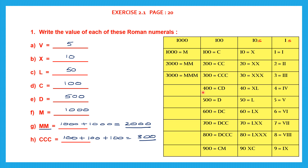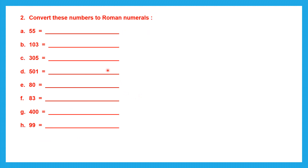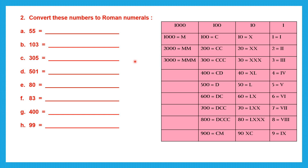If you know this table, it's going to be easy for you to write the value of Roman numerals. This is when we convert Roman numerals to Hindu-Arabic numerals. Now let's convert numbers to Roman numerals. We're going to keep this table in mind. For 55, that is 50 plus 5 — 50 is L and 5 is V, so 55 is LV.